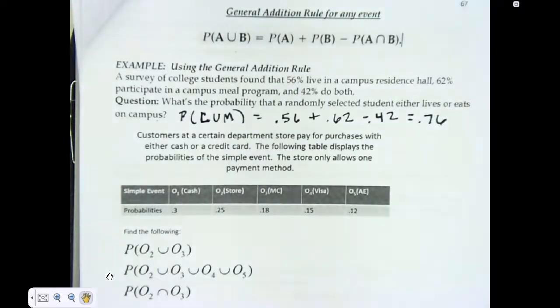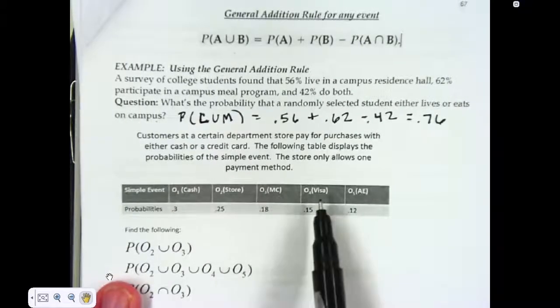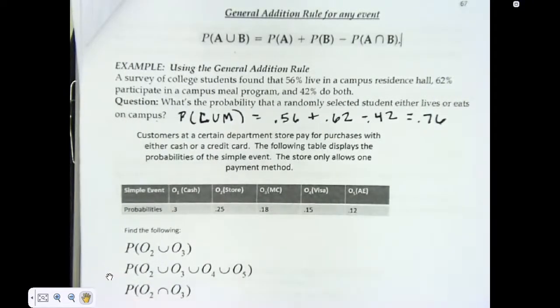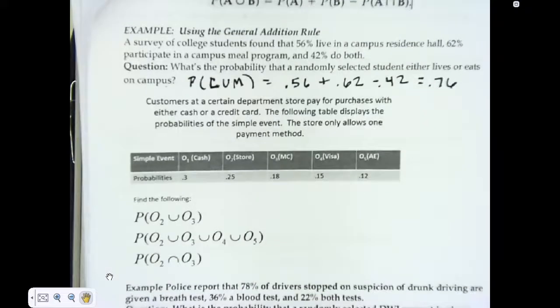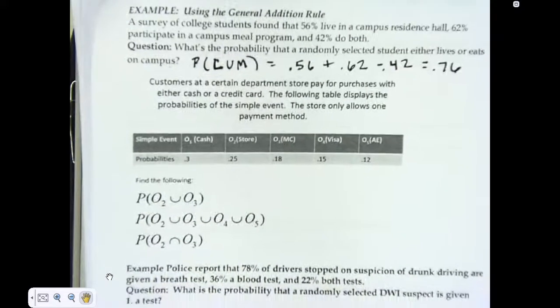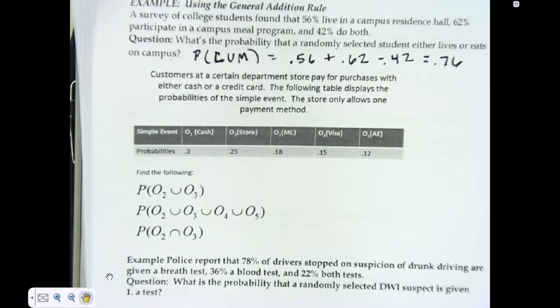Now I have another situation. Customers at a certain department store pay for purchases with either cash or credit card. They have a table that displays how they pay: cash, store credit card, MasterCard, Visa, American Express. They have some different events here, and they want you to find the probabilities. Generally, in this case, we're just going to add them, because you're normally not going to pay with both.